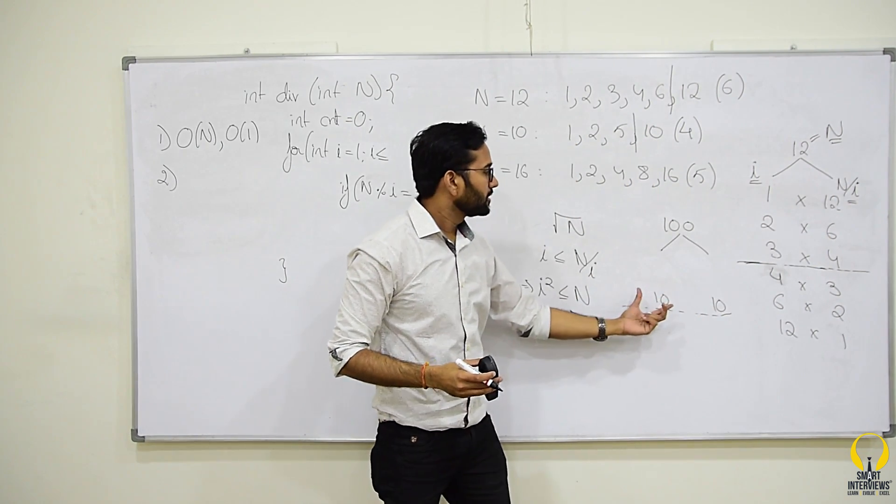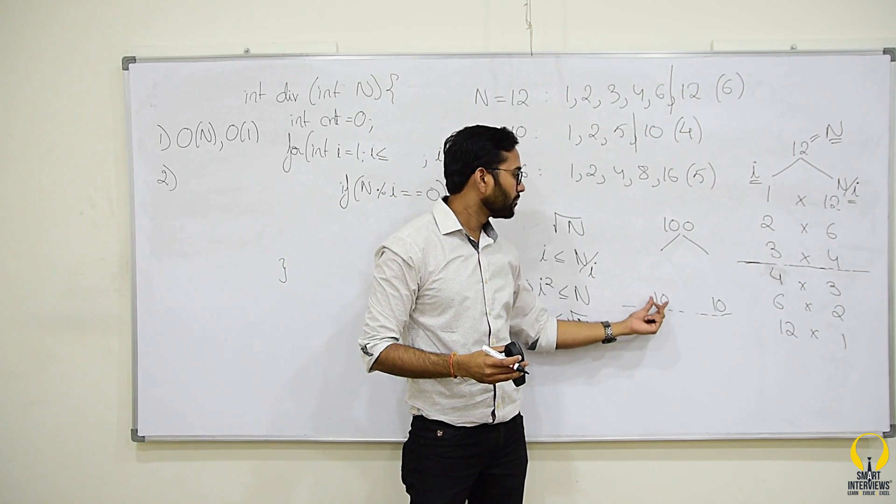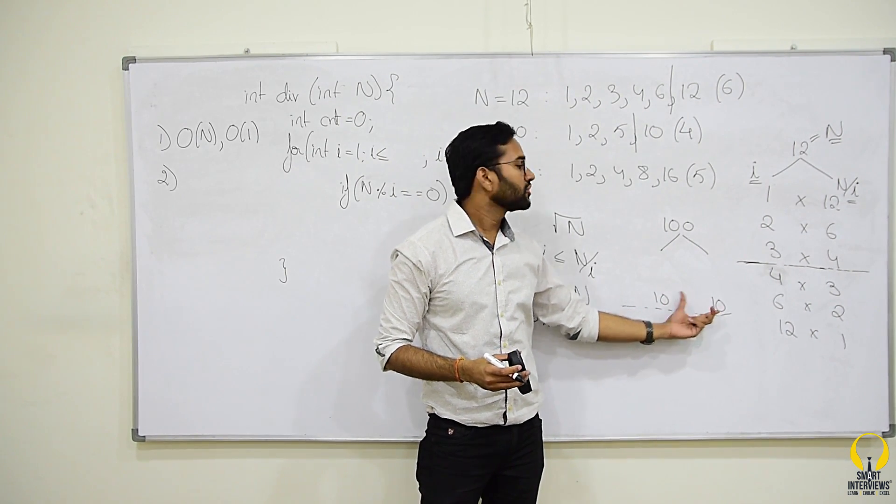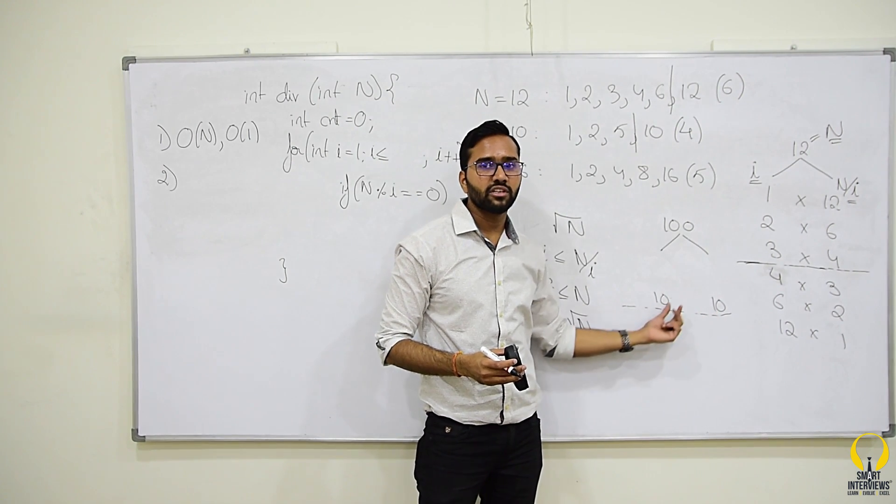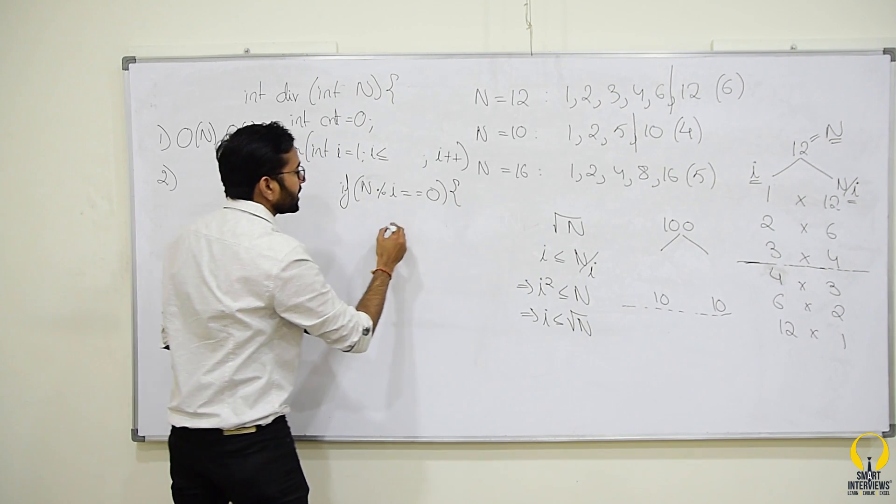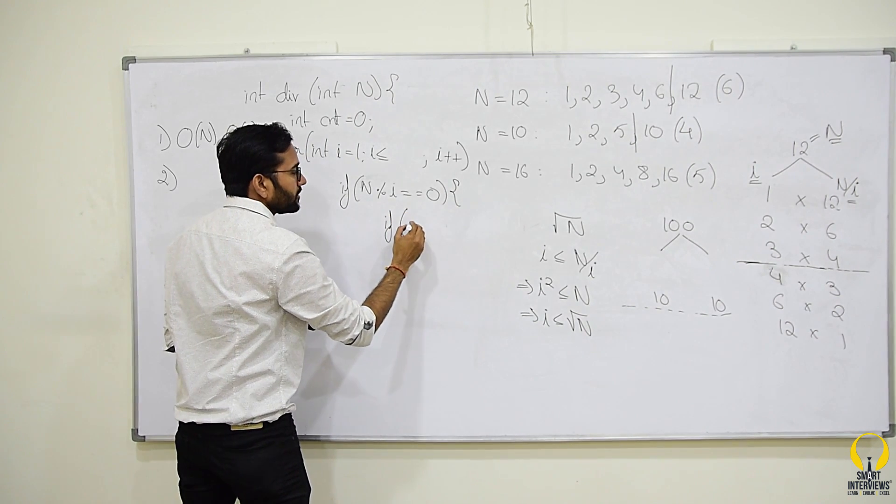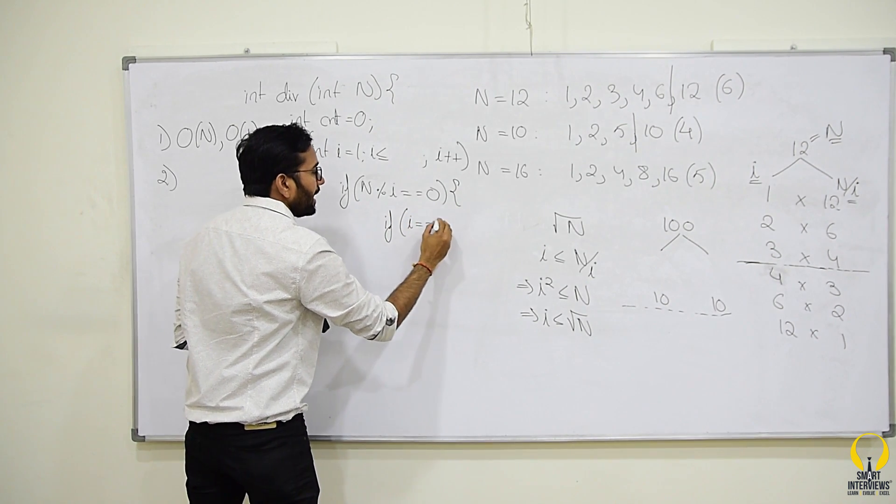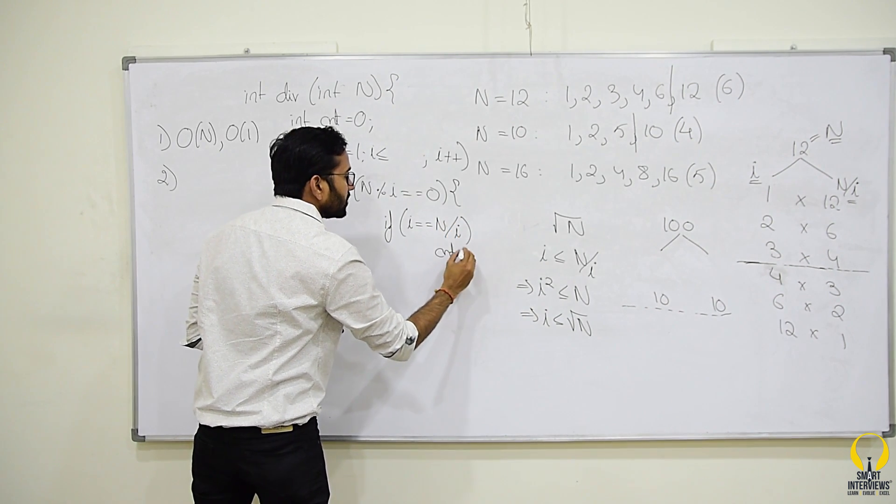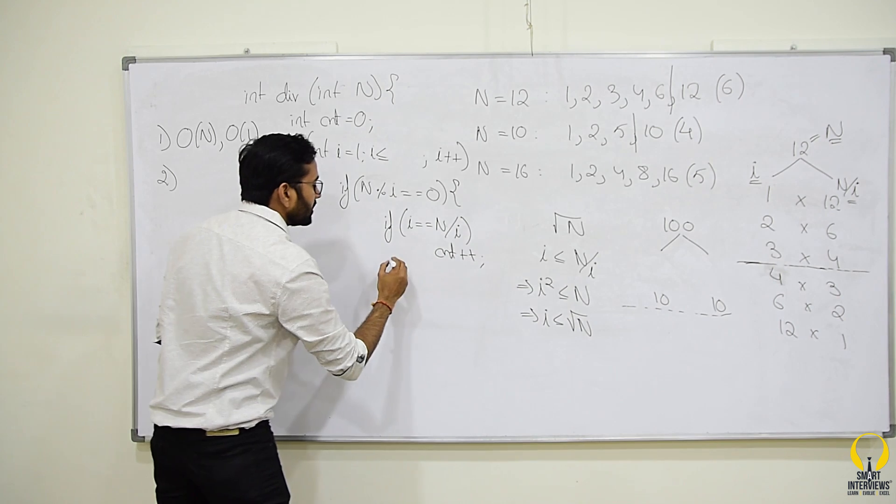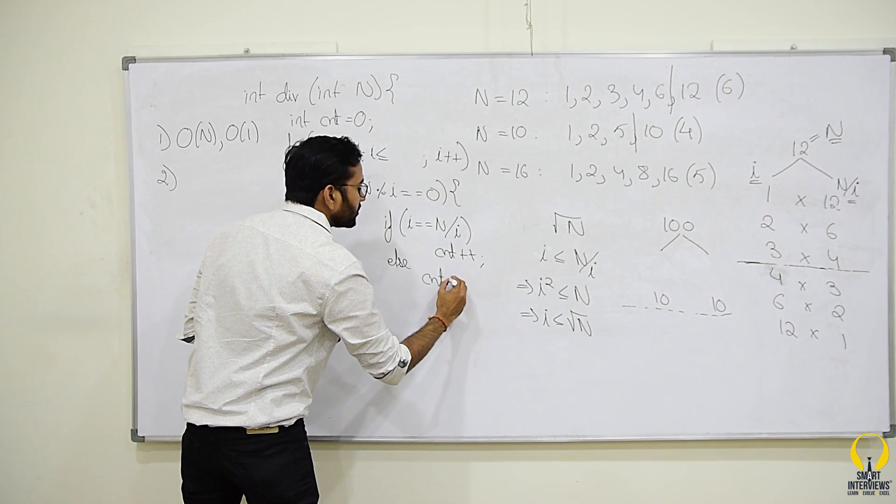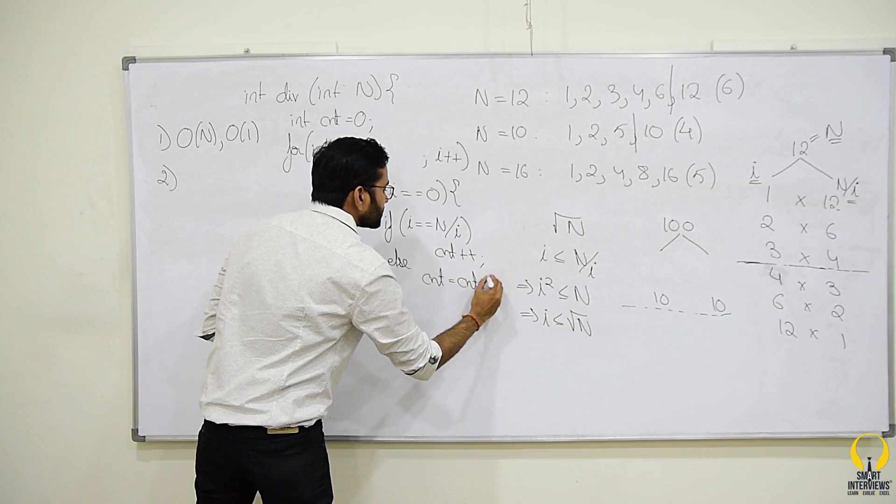But, in case of 100, both i and n/i are same. So, we should not increment the count by 2, we should increment the count by 1. So, within this condition, we can check that if i and n/i are same, we should do count++. Otherwise, we should do count equal to count plus 2.